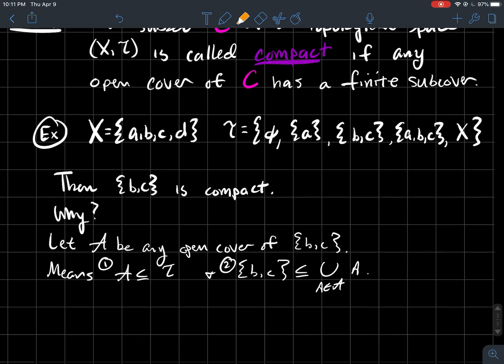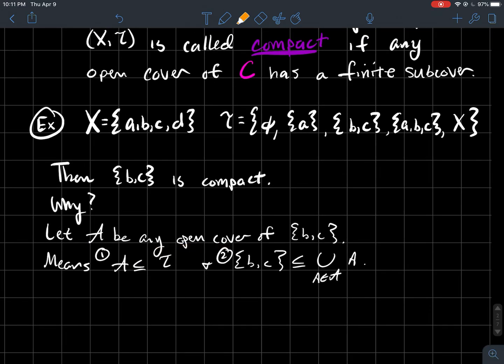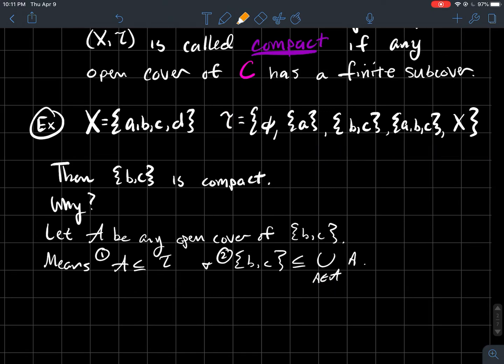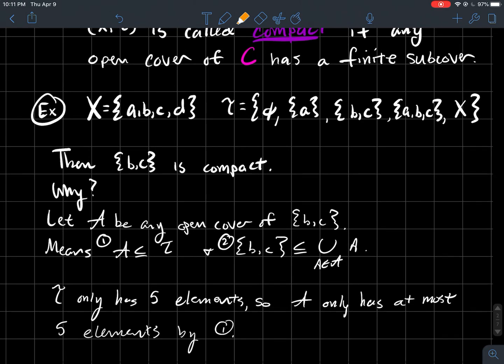So what do we know about fancy A? If it's an open cover, fancy A satisfies those two things like we just talked about. Fancy A has to consist of things from the topology. And also B, C has to be contained in the union of stuff in fancy A.